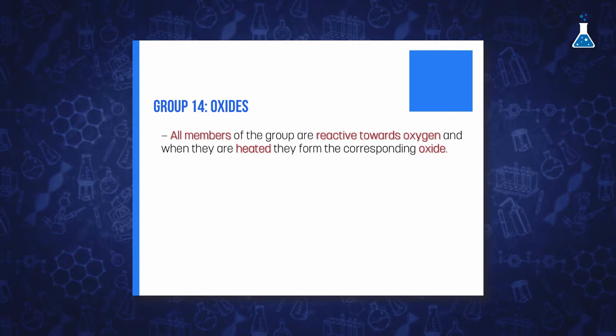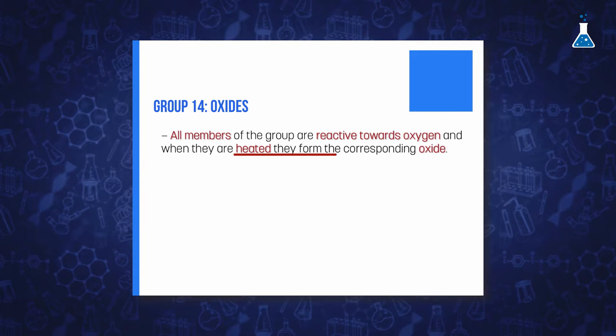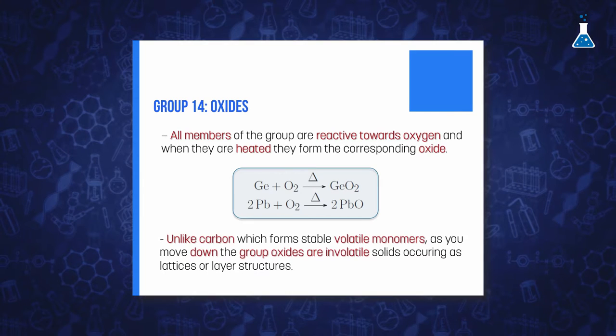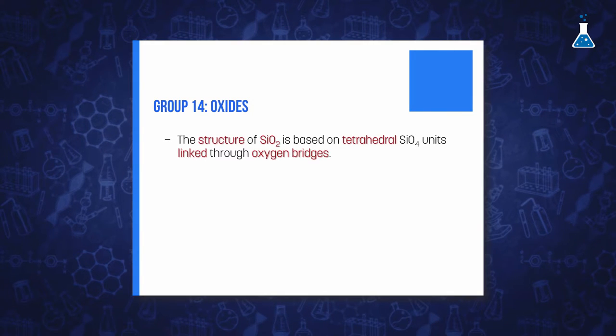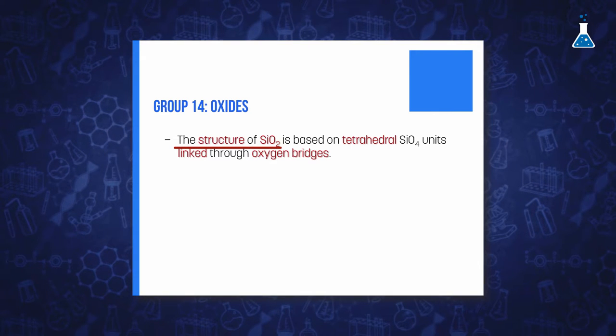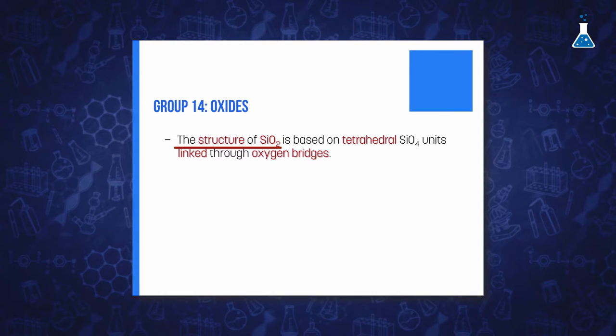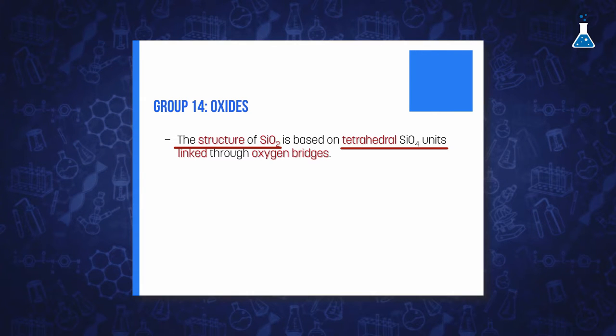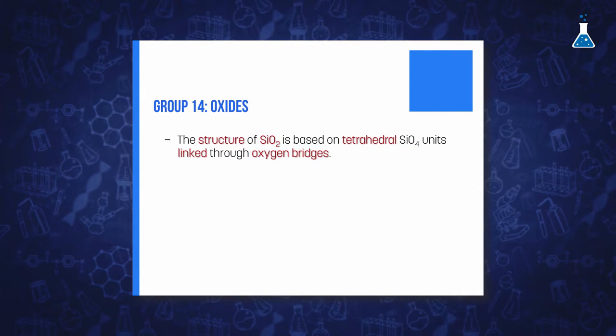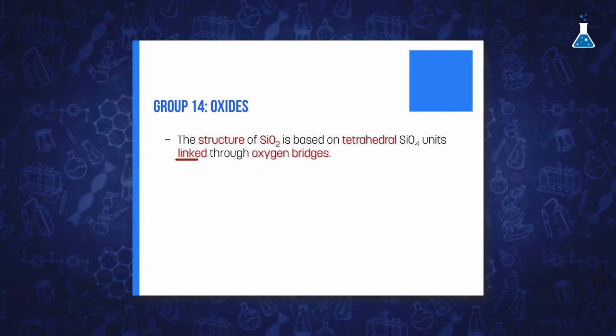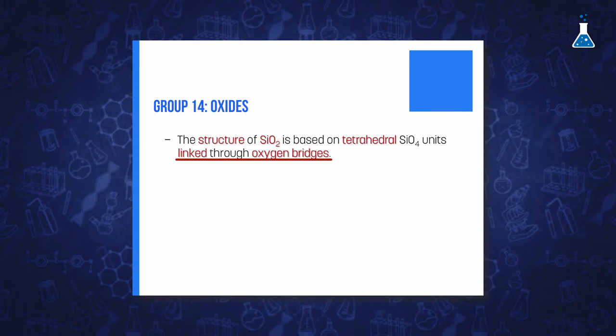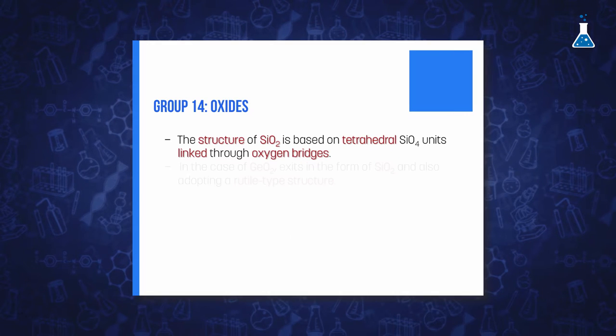We should also mention oxides as another important type of compound. All members of the group are reactive towards oxygen and when heated they form the corresponding oxide. When we descend from carbon to silicon, we observe a big difference between the volatile and monomeric oxide of carbon and the covalent network structure of silica. The structural chemistry of silicon dioxide is quite complex and occurs in many forms, mostly based on tetrahedral SiO₄ units where each silicon is bound to four oxygen atoms through single bonds. The units are interconnected through oxygen bridges to form the final structure. For the rest of the group members, dioxides are also known, with more considerable ionic character, and they usually adopt a rutile structure.